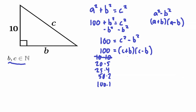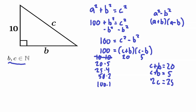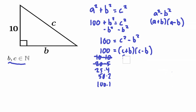Next, let's check 20 × 5. So c + b = 20 and c − b = 5. Adding these equations gives 2c = 25, and solving for c we get c = 12.5. This does not work because b and c must be integers, and 12.5 has a decimal, so this is not a valid answer.